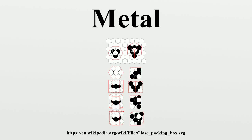The best known precious metals are gold and silver. While both have industrial uses, they are better known for their uses in art, jewelry, and coinage. Other precious metals include the platinum group metals: ruthenium, rhodium, palladium, osmium, iridium, and platinum, of which platinum is the most widely traded. The demand for precious metals is driven not only by their practical use, but also by their role as investments and a store of value. As of summer 2006, palladium was valued at a little under half the price of gold, and platinum at around twice that of gold.